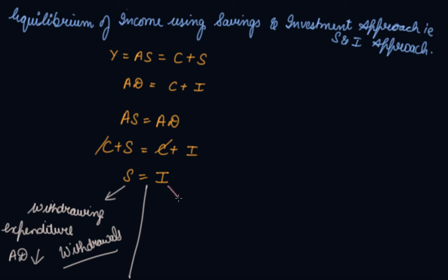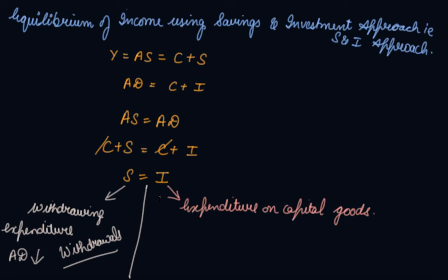If I talk about investment, your investment means expenditure on capital goods, which increases the flow of stock. So if you are investing something, you are buying something — you are doing expenditure on capital goods. If you are investing your money in a car, which means you are buying a capital good, you are doing an expenditure, which means your aggregate demand will increase. These are termed as injections in the economy. Injection means you are injecting money into the economy through expenditures, while withdrawals means you are withdrawing money from the economy by saving.